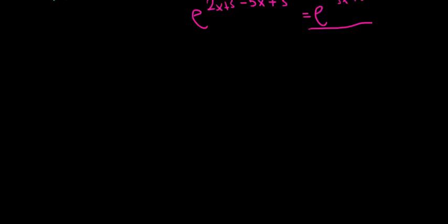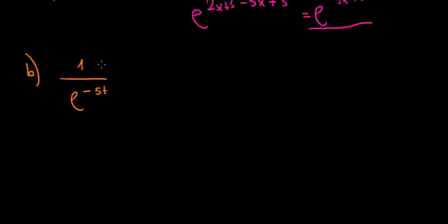Now for Part B. We have 1 divided by e to the power of minus 5t, all raised to the power of 0.25.